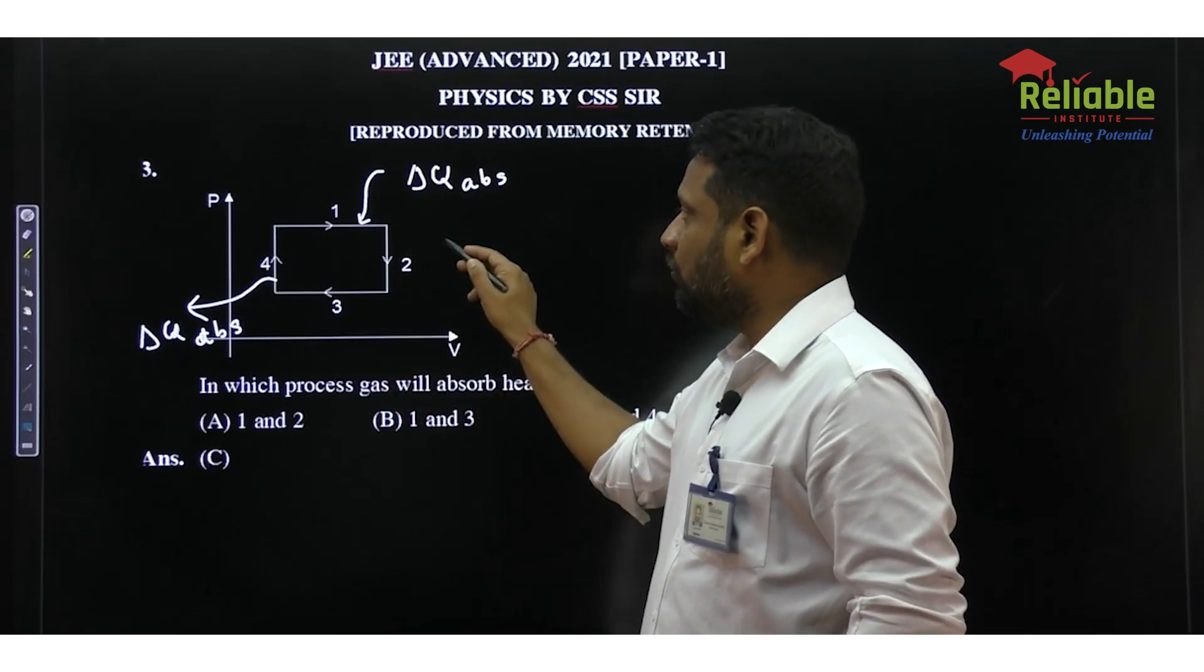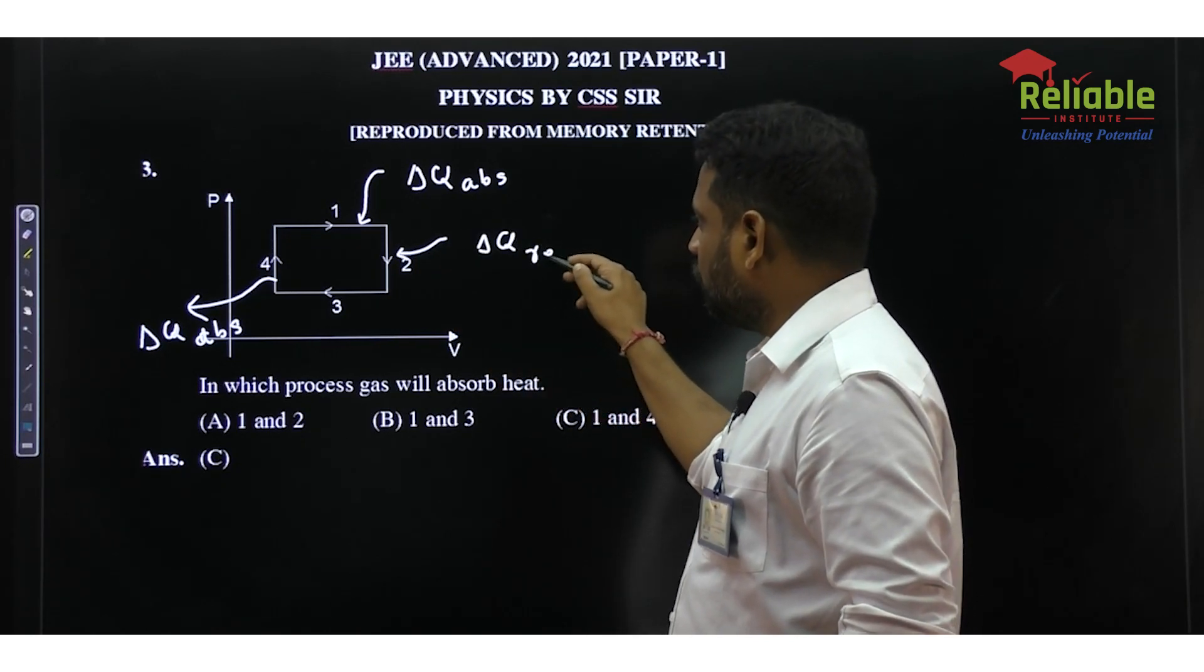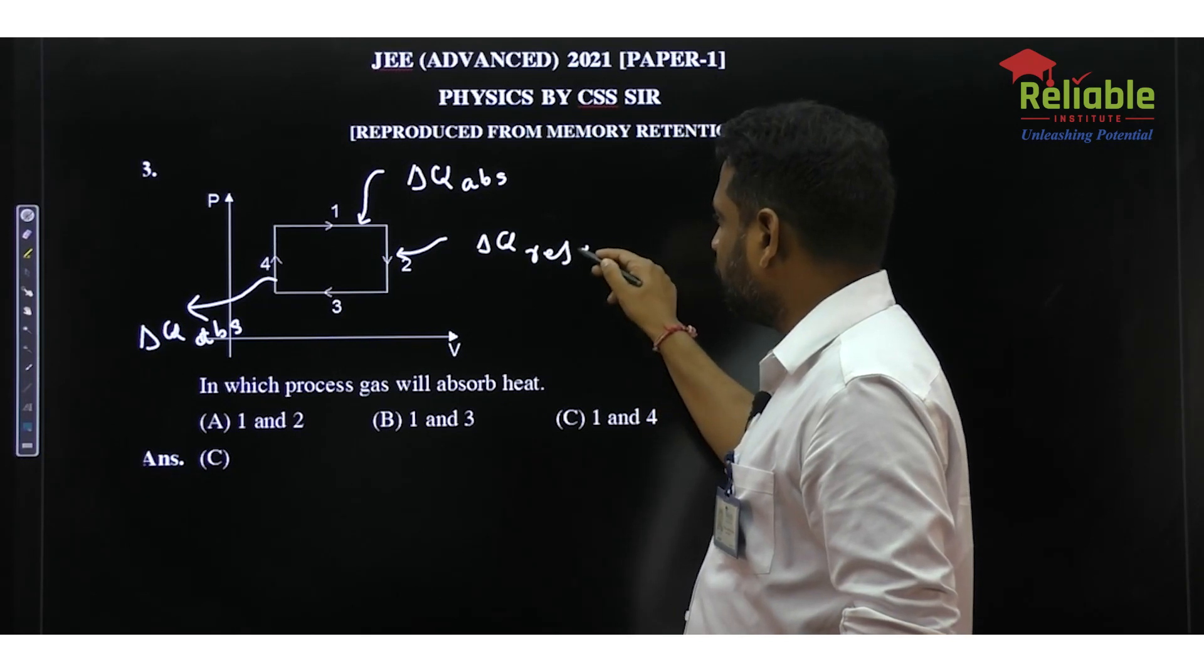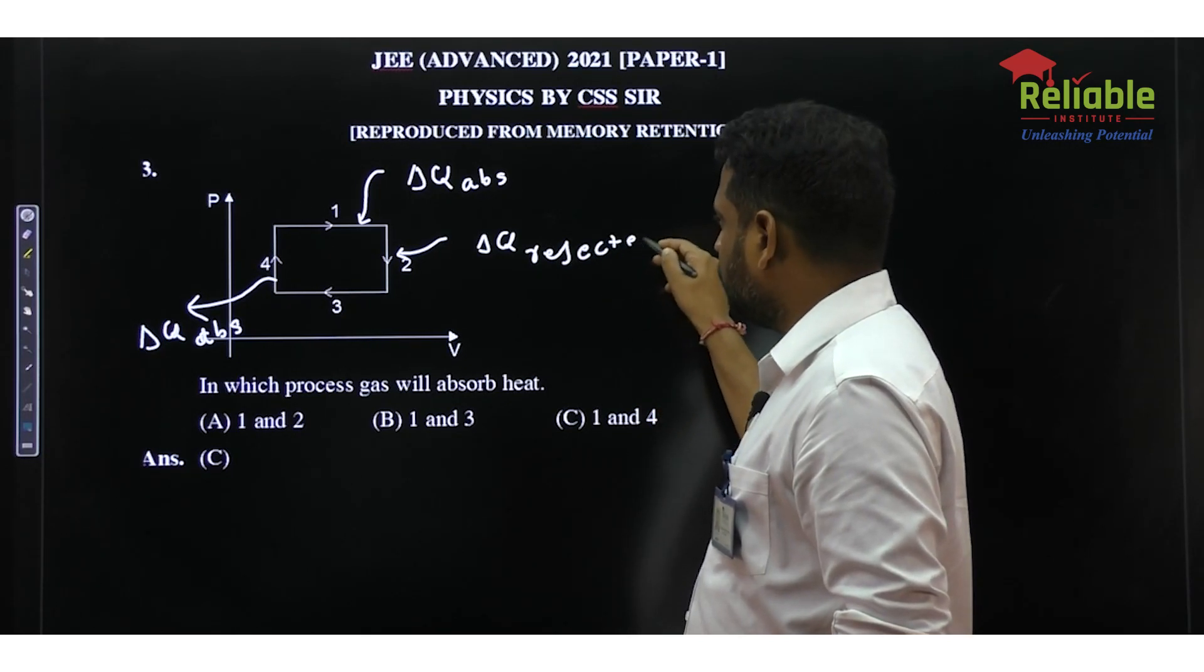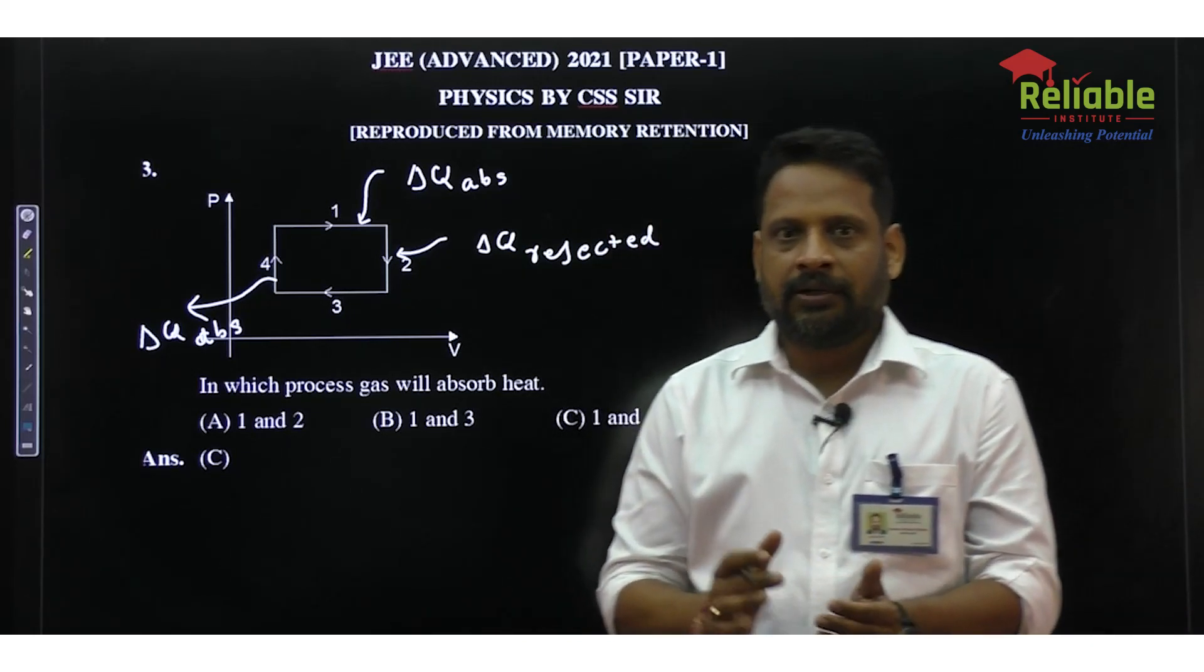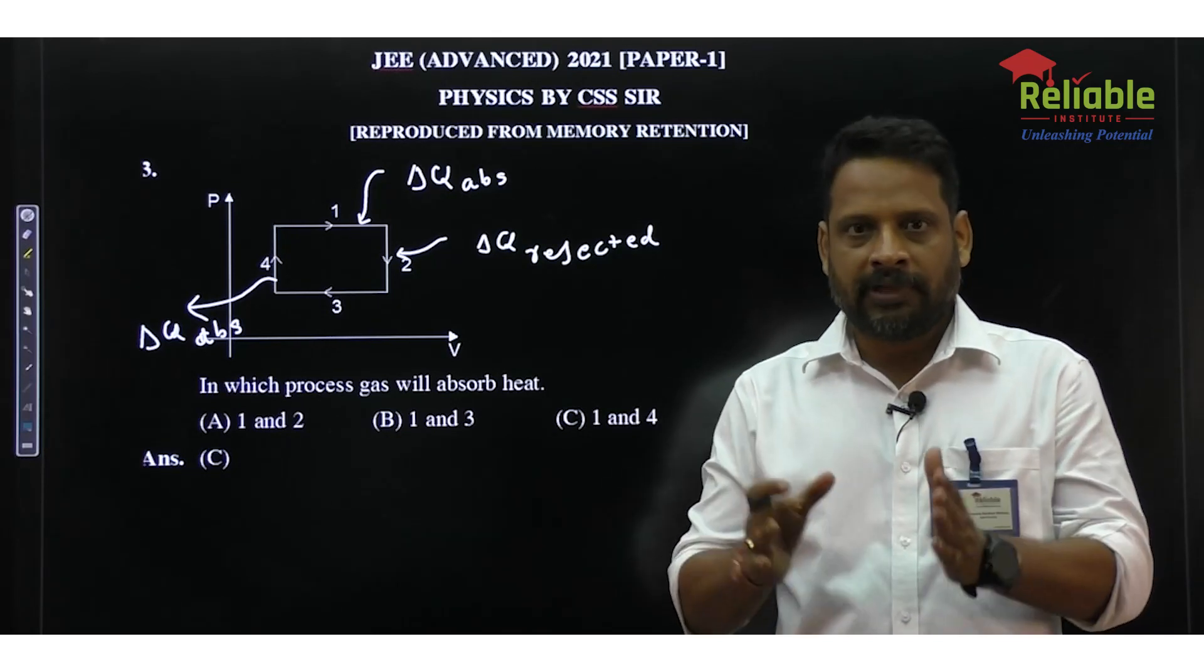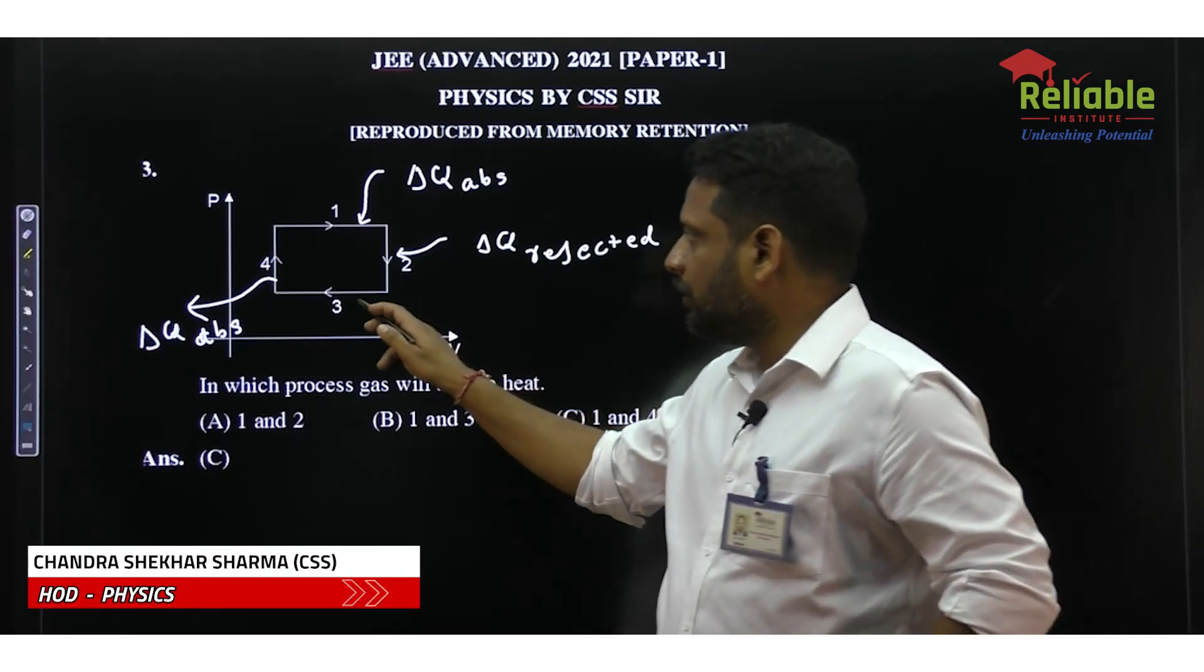In process 2, it is isochoric process - volume constant but pressure is going down, so here Delta Q is negative, so heat is rejected. So in process number 2, when the volume is constant and pressure goes down, temperature also goes down, so gas releases some energy.